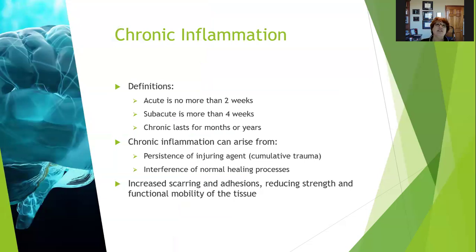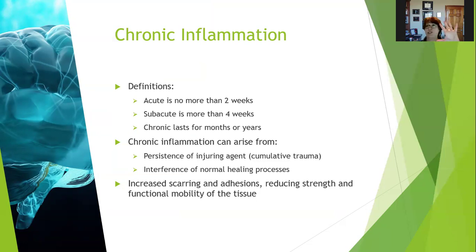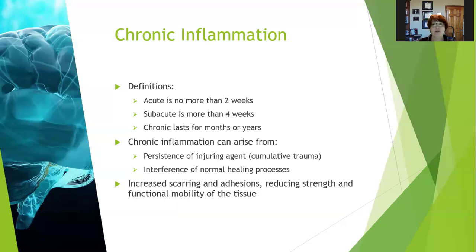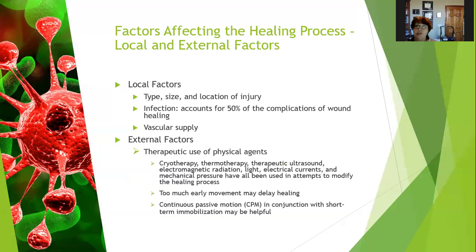Acute inflammation is no more than two weeks. Subacute is more than four weeks, and chronic can last for months or years. Chronic inflammation can arise from the persistence of an injuring agent, cumulative trauma, or interference of normal healing processes for many different reasons. Imagine you have a big splinter in your hand that you can't get out — you can get chronic inflammation around that splinter site until it's finally removed and the tissue resolves. With chronic inflammation, you can get increased scarring and adhesions, which reduces the strength and functional mobility of the tissue. Treating things as soon as possible is a good way to avoid chronic inflammation.